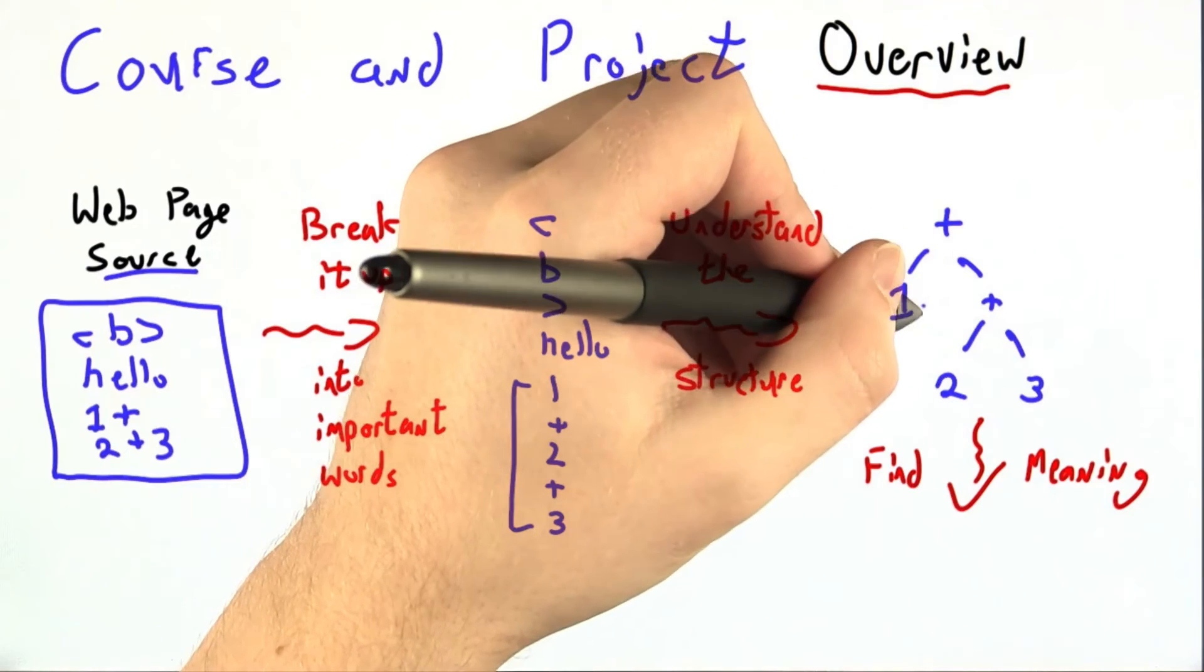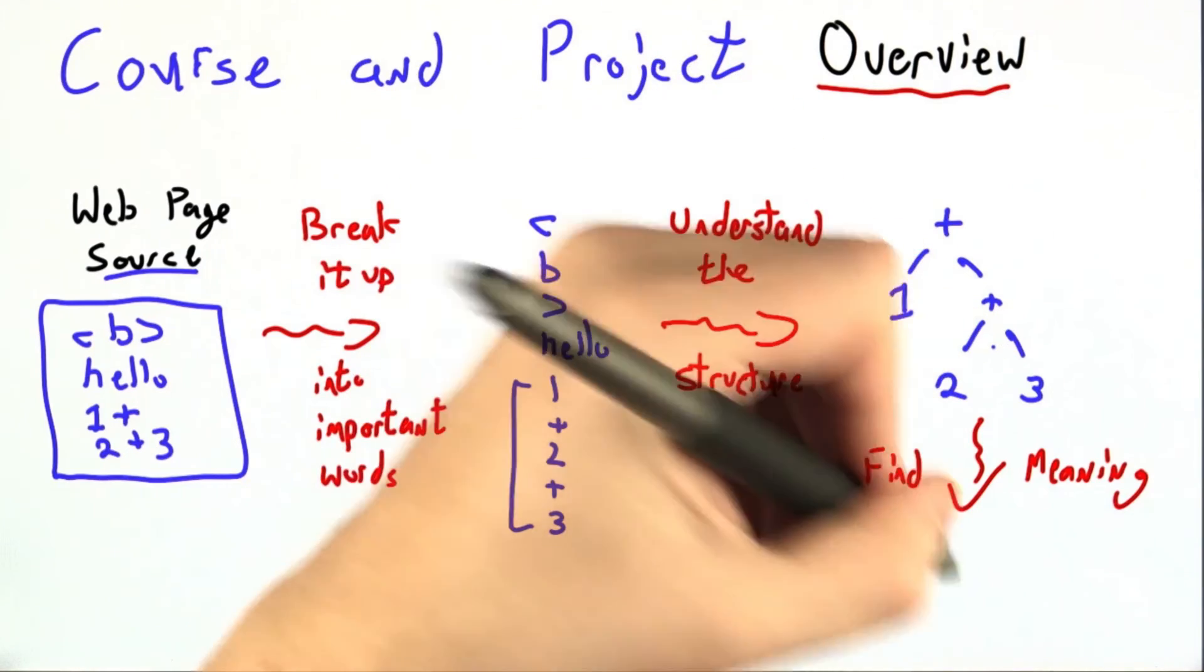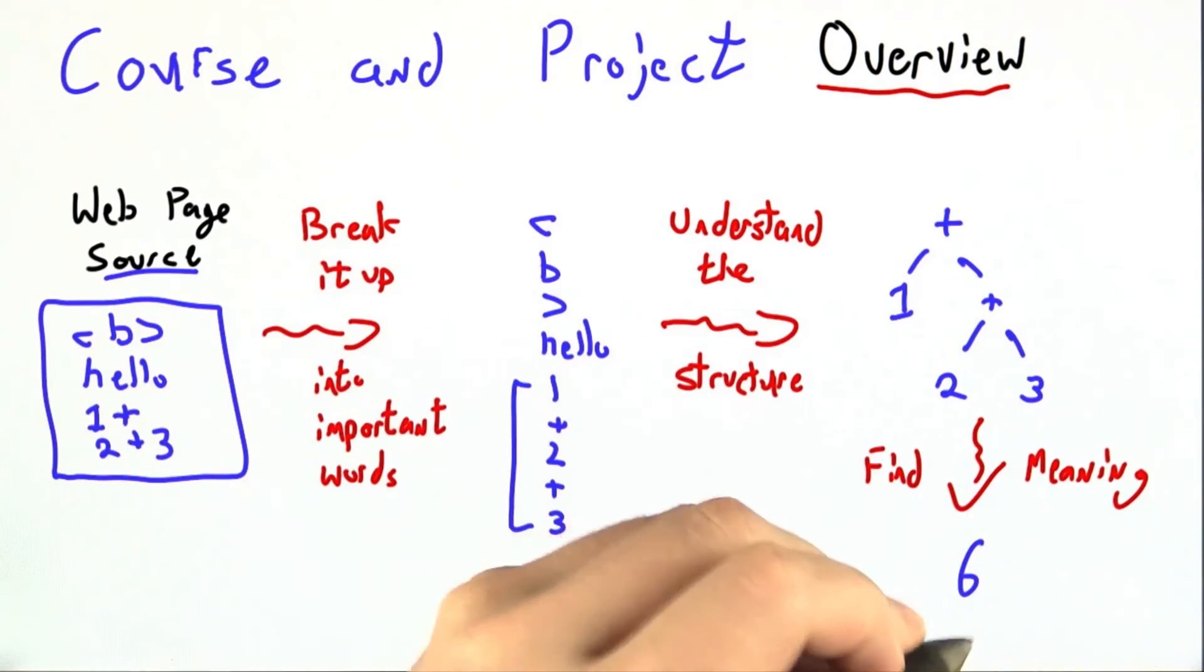And then finally, we'll figure out the meaning of that structure. For example, in this case, maybe all of that adds up to 6, and that's what we'll display in our resulting web page.